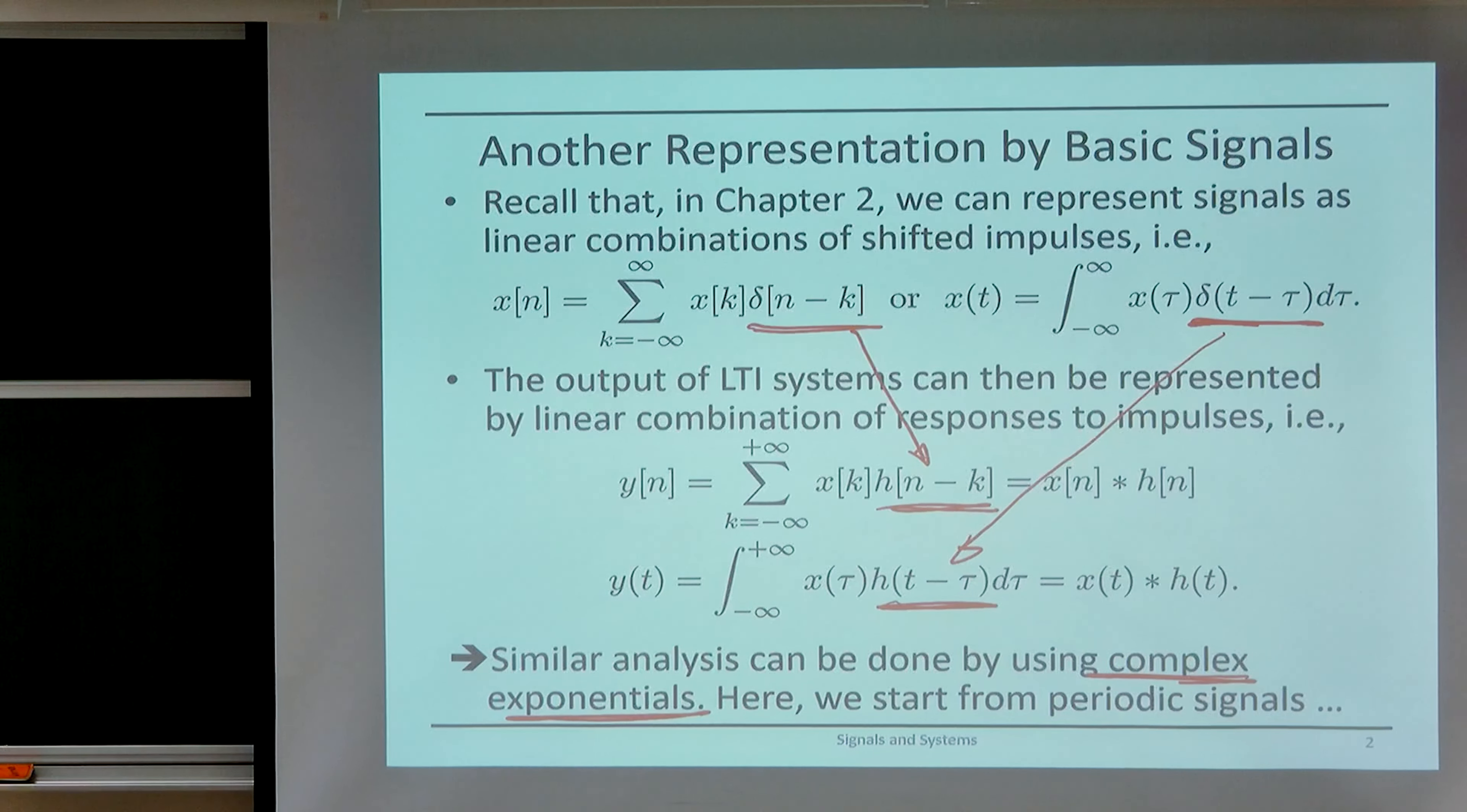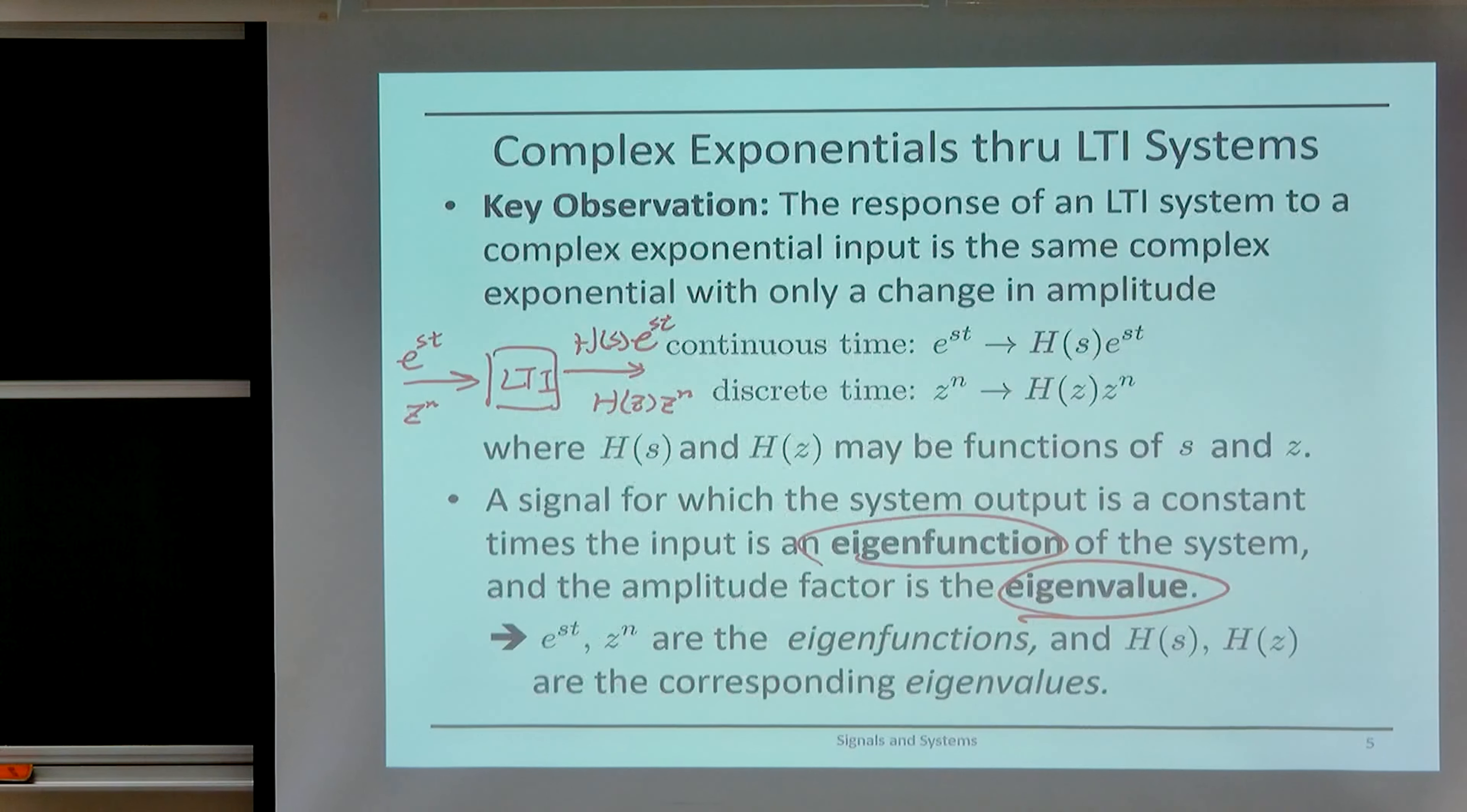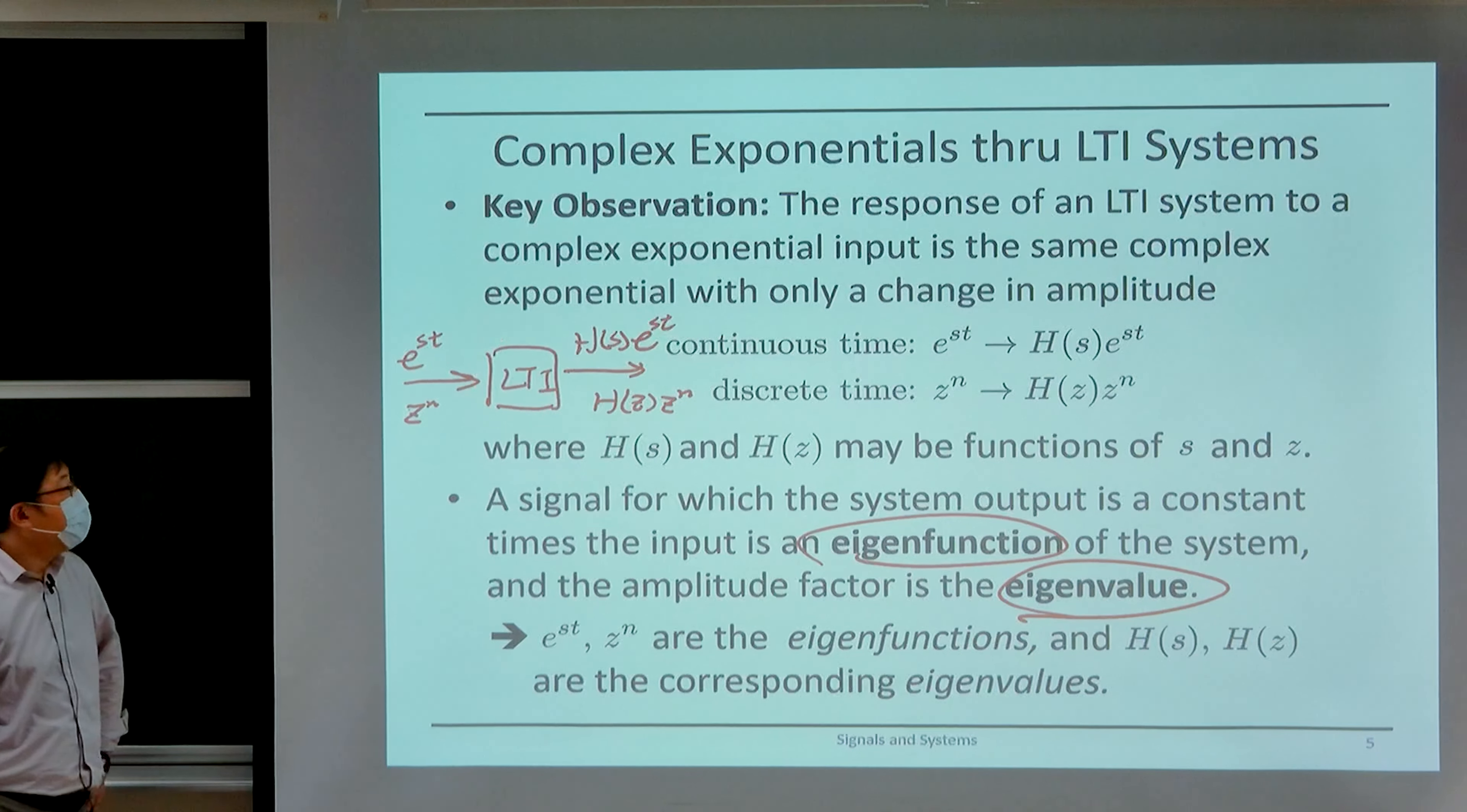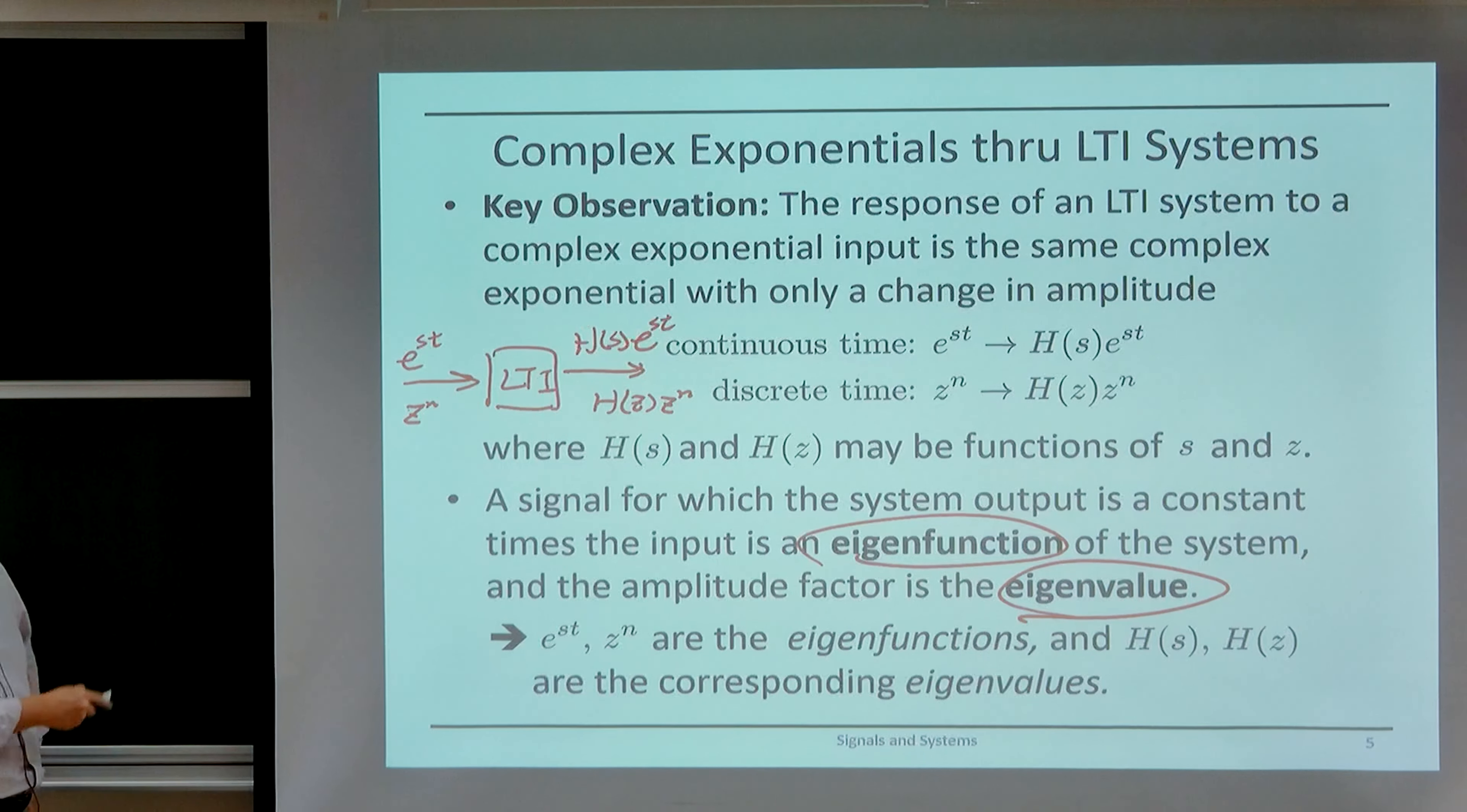Now one advantage of doing so is that when we pass a complex exponential through a linear time invariant system, we know that the output will be the same complex exponential scaled by a value that depends on this exponent s. And this we call the eigenvalue corresponding to the eigenfunction e^(st).